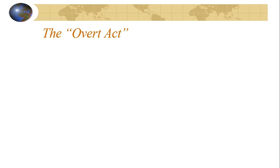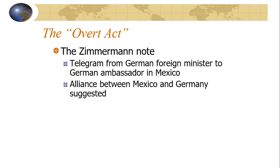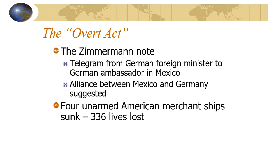Americans often want a legitimate reason to enter into war. The first overt act is the Zimmermann Note — a telegram from the German foreign minister to the German ambassador in Mexico, suggesting that if Mexico were to supply Germany, and Germany entered the war with the United States and won, they would give land back to Mexico. This concerned us, since a third of our country was land taken from the Mexicans in the Texas Revolution and the Mexican-American War. Additionally, four unarmed American merchant ships were sunk and 336 lives were lost. This does not include the Lusitania — though the Lusitania raised awareness of freedom of the seas, it was not a direct overt act that got us involved in the war.